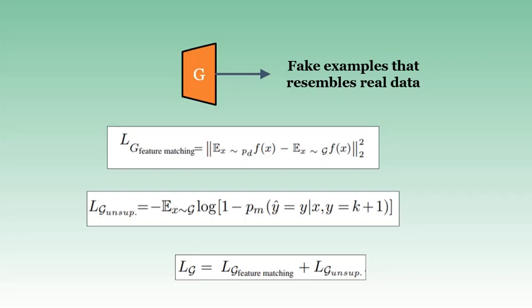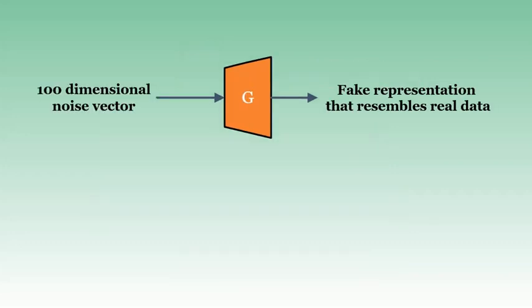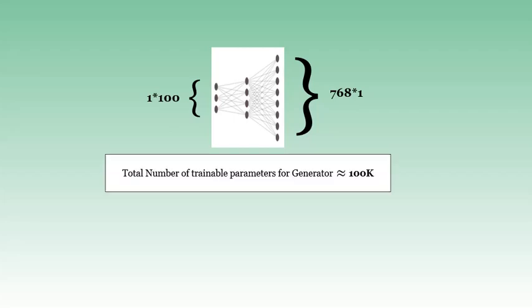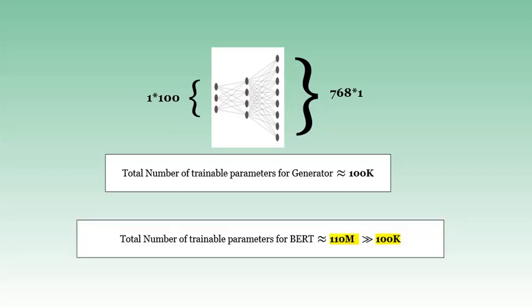During training we optimize both the generator and discriminator loss. You might think there is significant computational cost due to the generator, but let's have a look. The generator is basically a multilayered perceptron that takes a 100-dimensional random Gaussian noise vector and produces a 768-dimensional vector, which is the same as the BERT base model output dimension. The total number of trainable parameters would be approximately 100,000, which is much smaller than the total number of parameters in a BERT base model.